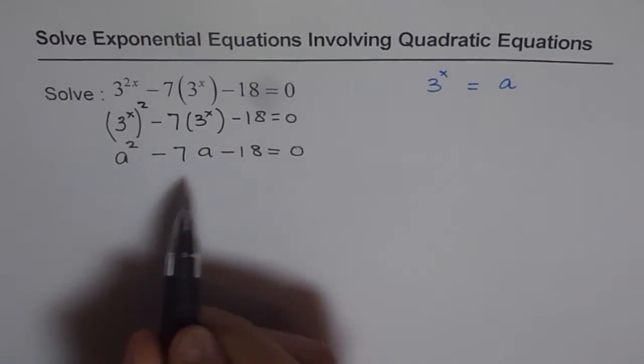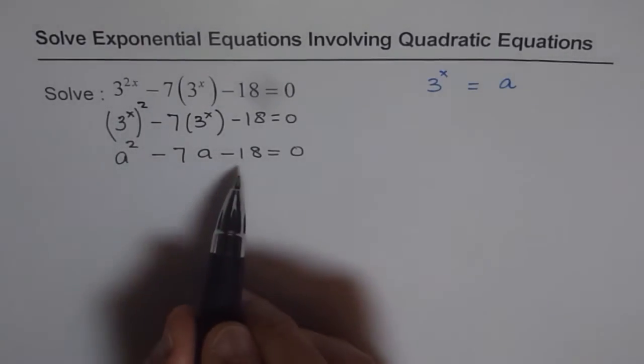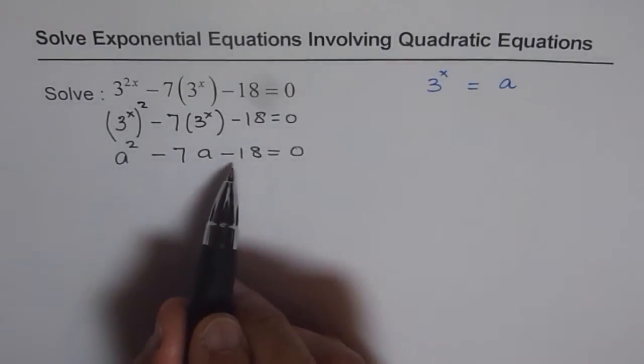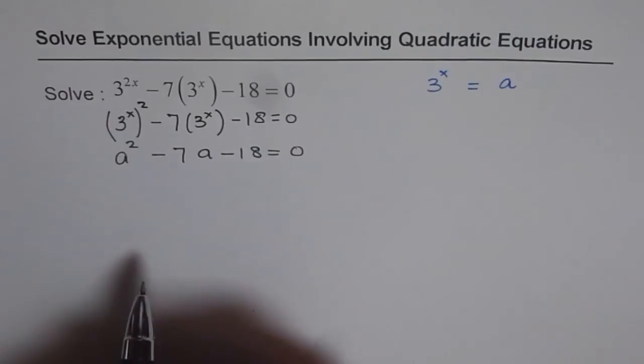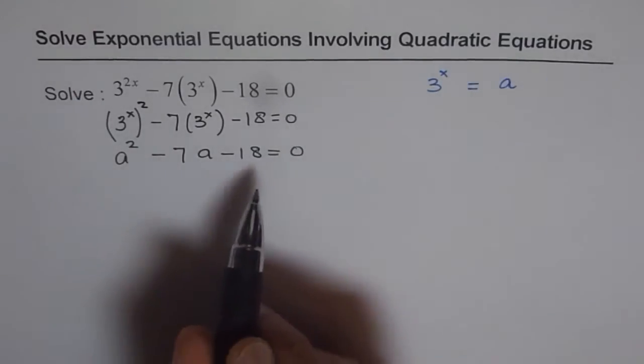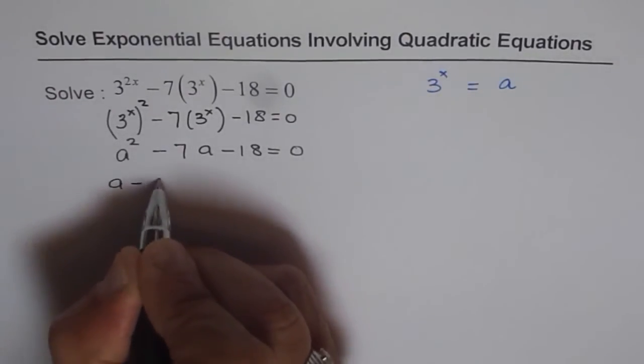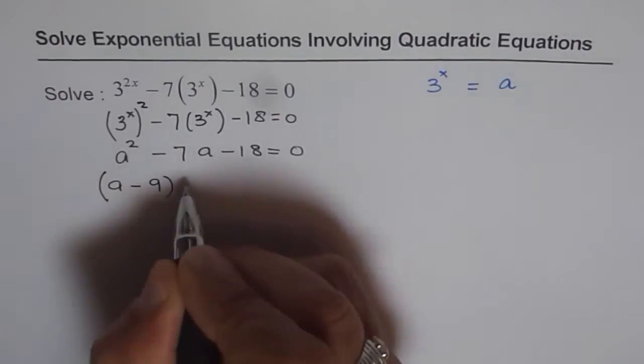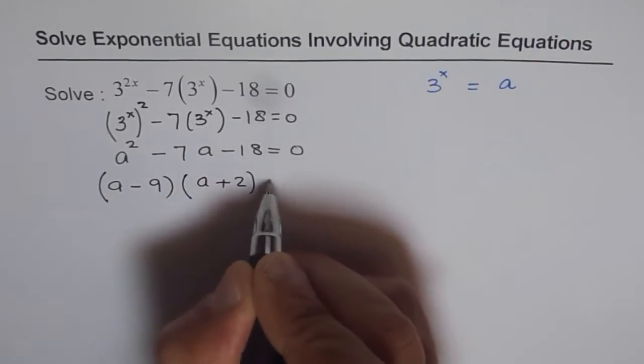Once you get a quadratic equation, you can always factor and then find the solution. So we need 2 numbers whose product is minus 18 and whose sum is minus 7. Those 2 numbers could be 9 times 2. And 9 should be minus. So we can write this as a minus 9 times a plus 2 equals 0.